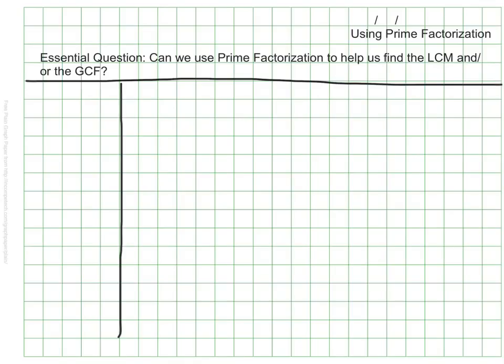First, let's find the prime numbers that make the following numbers. I want to find the prime factorization of 24 and 60, and I'm going to use that information to help me find both the least common multiple and the greatest common factor. So go ahead and pause the video and find the prime factorization for both 24 and 60.